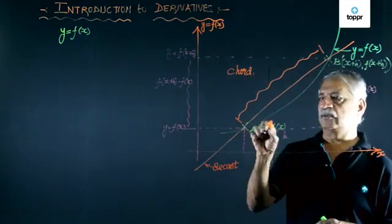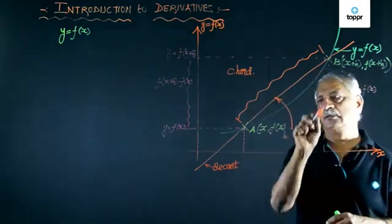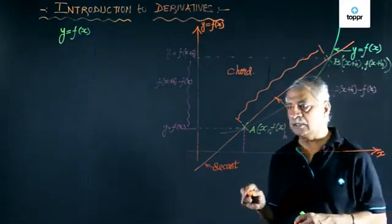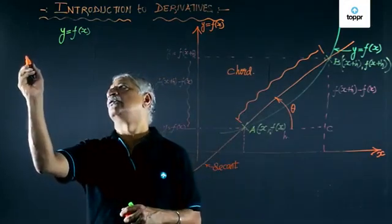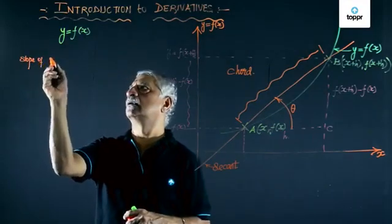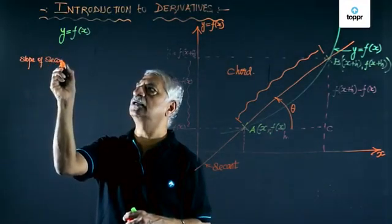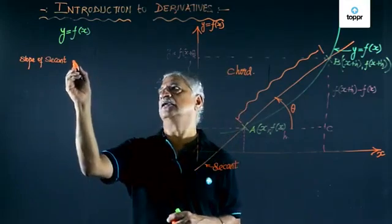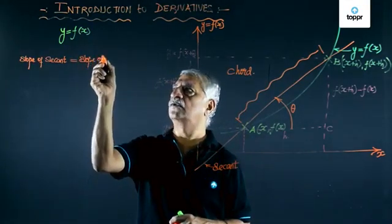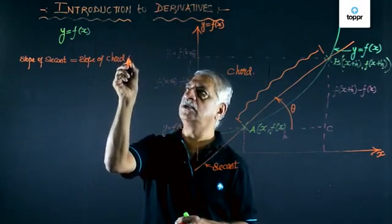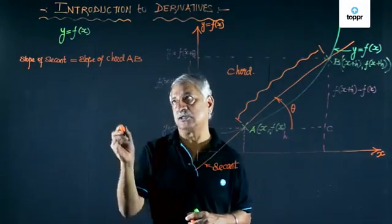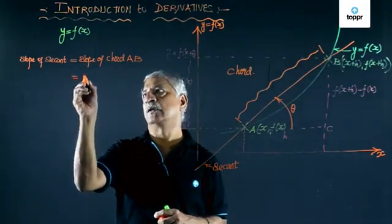If this angle, angle BAC, is theta, then I can definitely write down slope of secant, which is equal to slope of chord AB, which is tan theta.